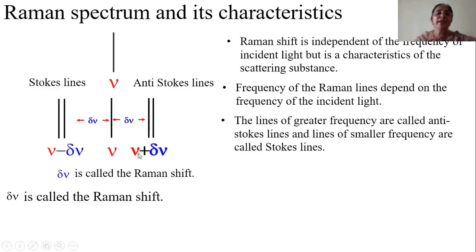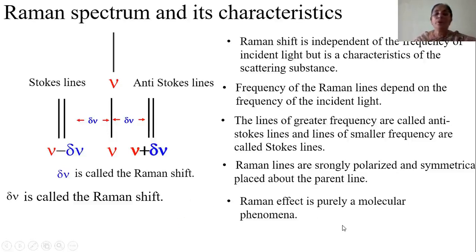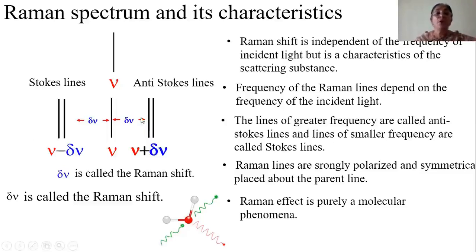The lines with greater frequency are known as anti-Stokes lines, and those with frequency less than the incident light are known as Stokes lines. Using an analyzer and polarizer, Raman studied the Raman lines and found they are strongly polarized and symmetrically placed about the incident line. The Raman Effect is purely a molecular phenomenon — the substance is made up of molecules, every molecule is made up of atoms. Raman Effect does not depend on atomic excitation of electrons but on how the molecules are disturbed due to the incidence of the light.